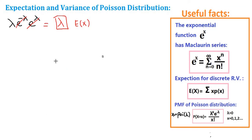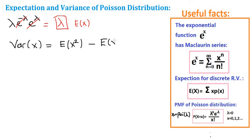Now we are going to continue to derive the variance. Variance by definition is the expectation of x squared minus the square of the expectation of x. We have already found the expectation in the previous part, which was lambda, and if we square it we obtain lambda squared. So we are good for that part.